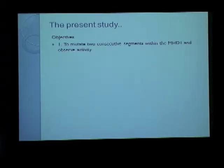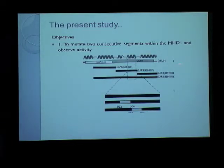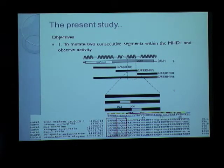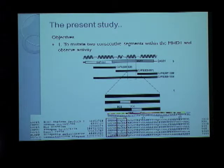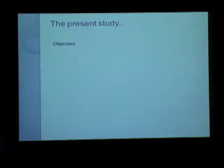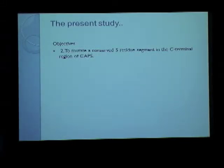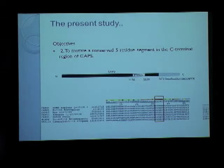This is where my project found its context. The first part of my project was to mutate two consecutive five-residue segments within the 69-residue-long fragment to alanines, and observe the function of these mutant constructs in a secretion assay. Sequence alignment reveals conserved residues within these five-residue segment regions whose functions are not known. The second part of my project was to mutate another conserved five-residue segment in the C-terminal region of CAPS, which preceded a dense core vesicle localization sequence. This segment, conserved between several species, also has an unknown precise function.